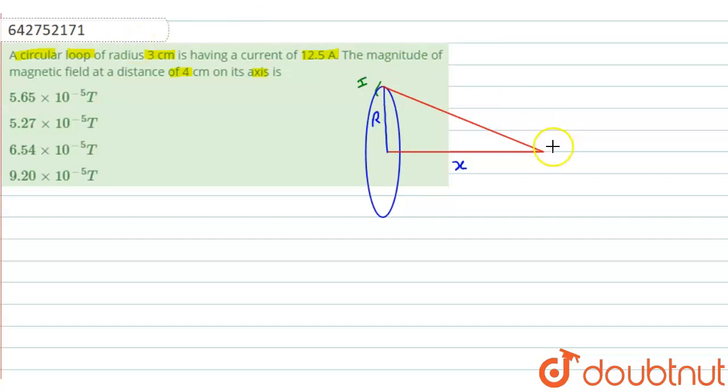like in this direction, and suppose this angle is phi. And due to this point, the magnetic field will be in this direction. So suppose that this is dB and this is dB dash.